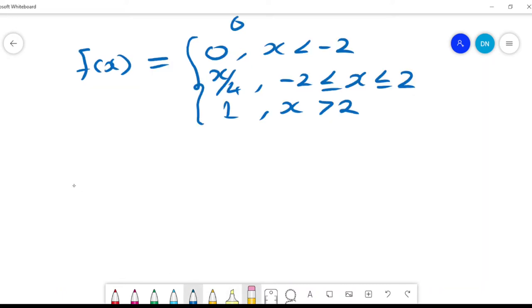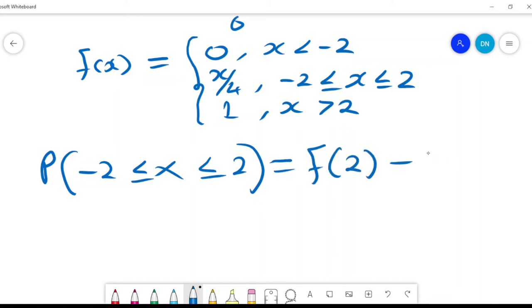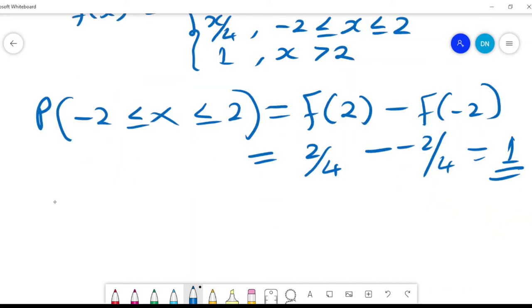And the probability that X lies between negative 2 and 2 will be F(2) minus F(-2). And therefore it will be 2 over 4 minus negative 2 over 4, which equals 1.